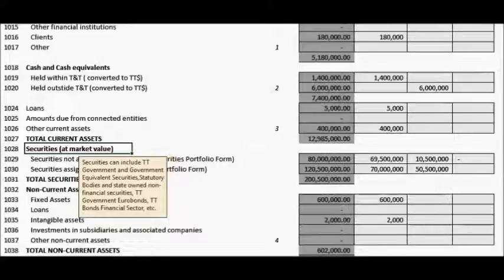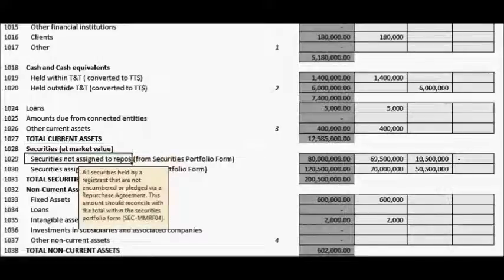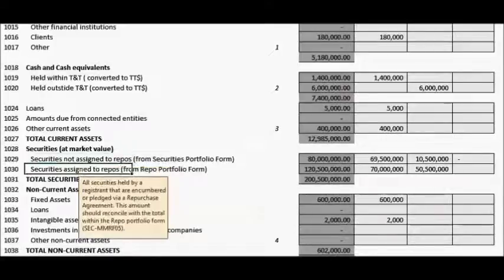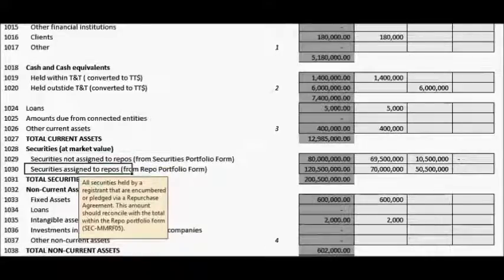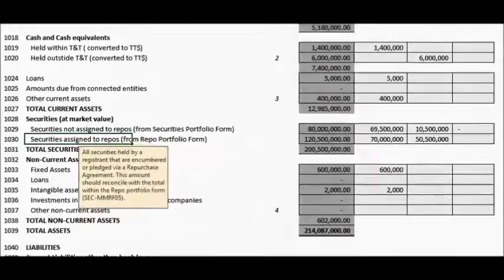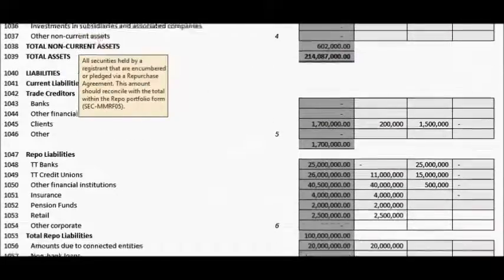This section contains two line items: Securities Not Assigned to Repos and Securities Assigned to Repos. Securities Not Assigned to Repos is intended to capture the total value of all securities held by the reporting entity that are not the subject of a pledge in a repurchase agreement. Securities Assigned to Repos is intended to capture the total value of all securities held by the reporting entity that are used as an underlying pledge for a repurchase agreement.